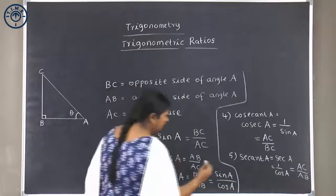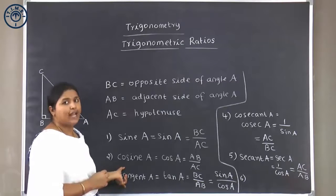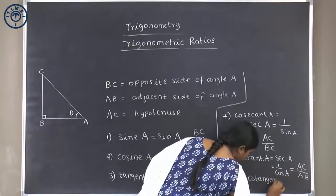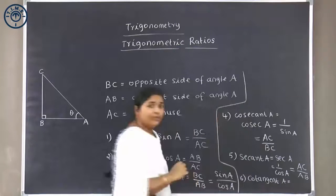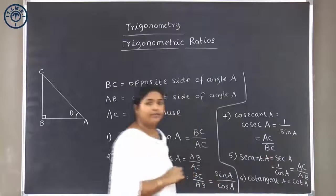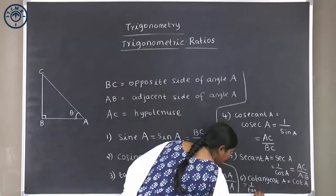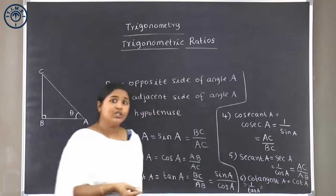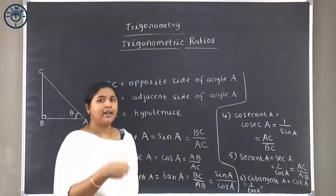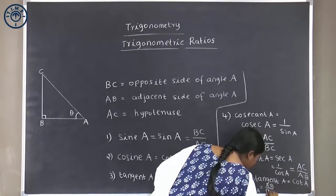Finally, the multiplicative inverse of tangent A is called cotangent A, written as cot A. Cot A is equal to 1 over tan A. Since tan A is opposite side by adjacent side, the inverse is adjacent side by opposite side, which is AB by BC.